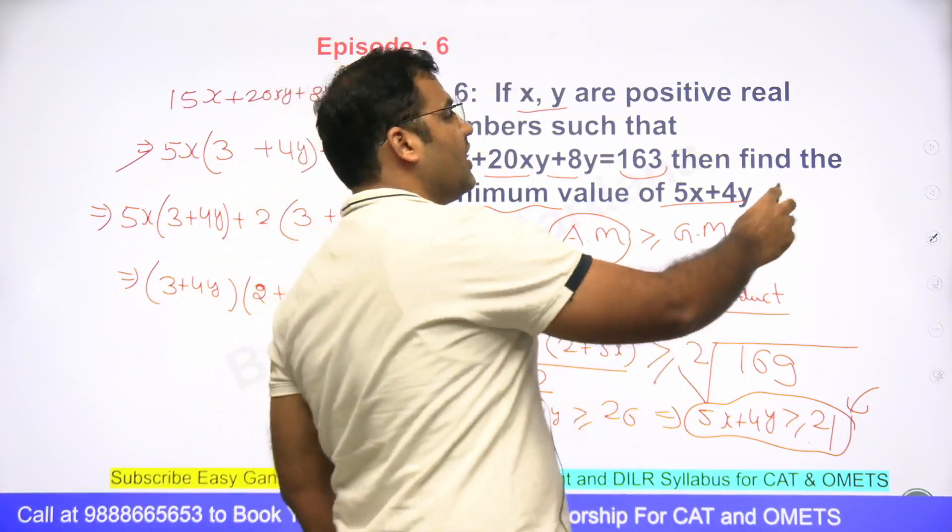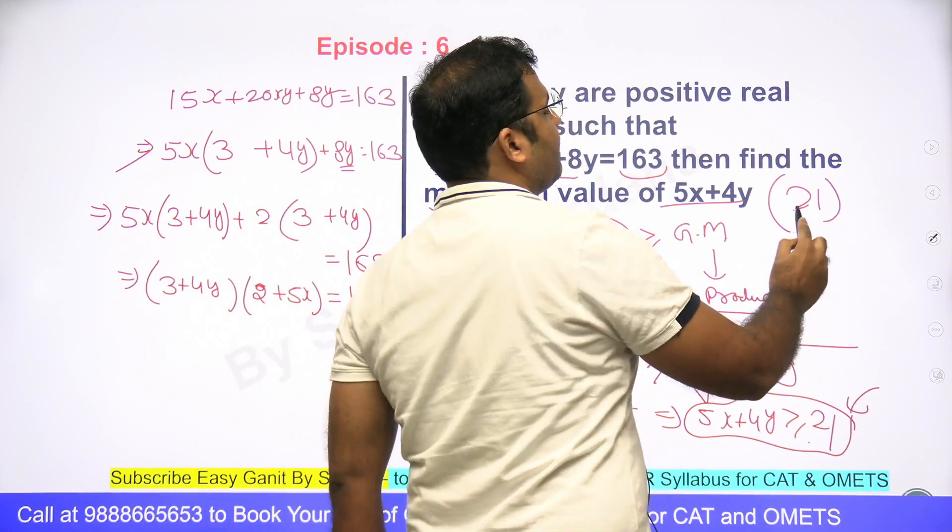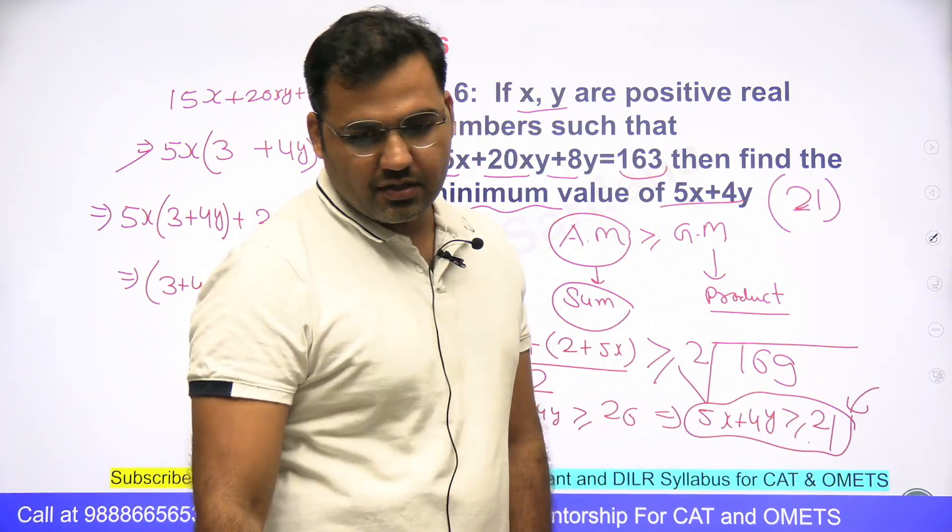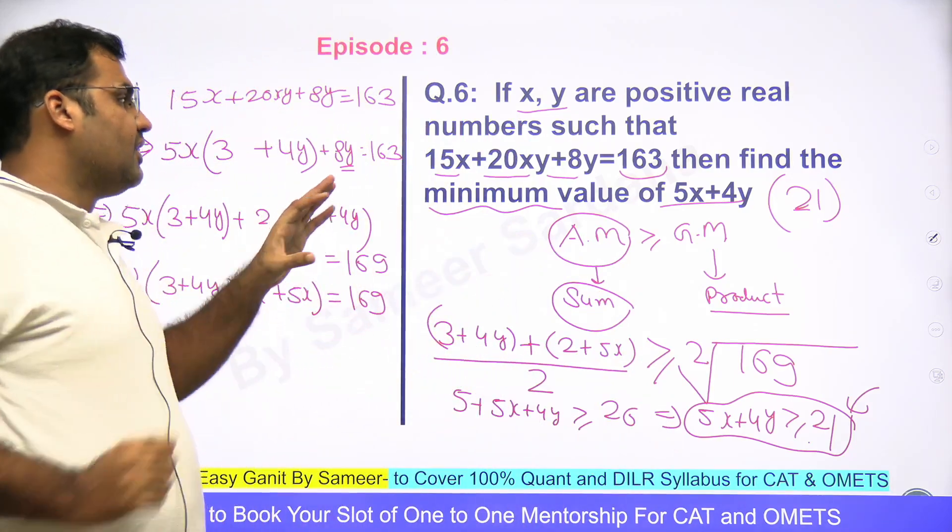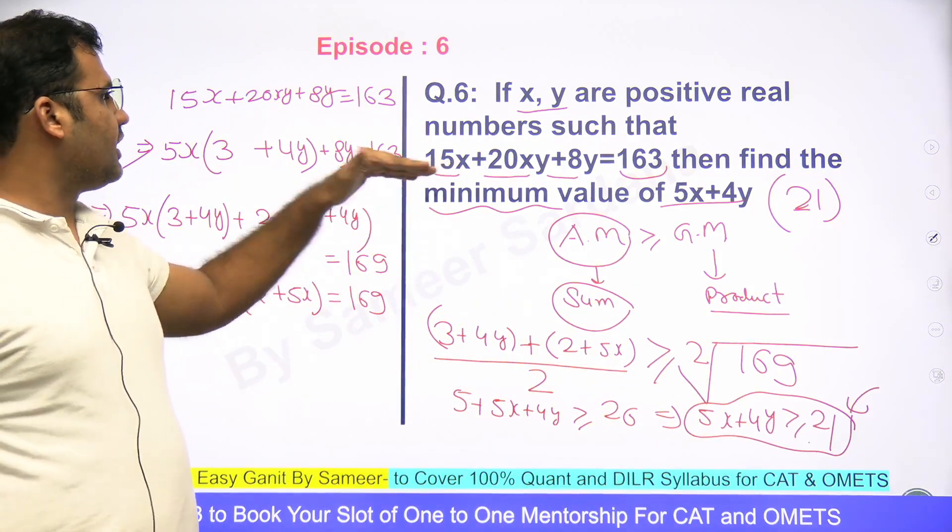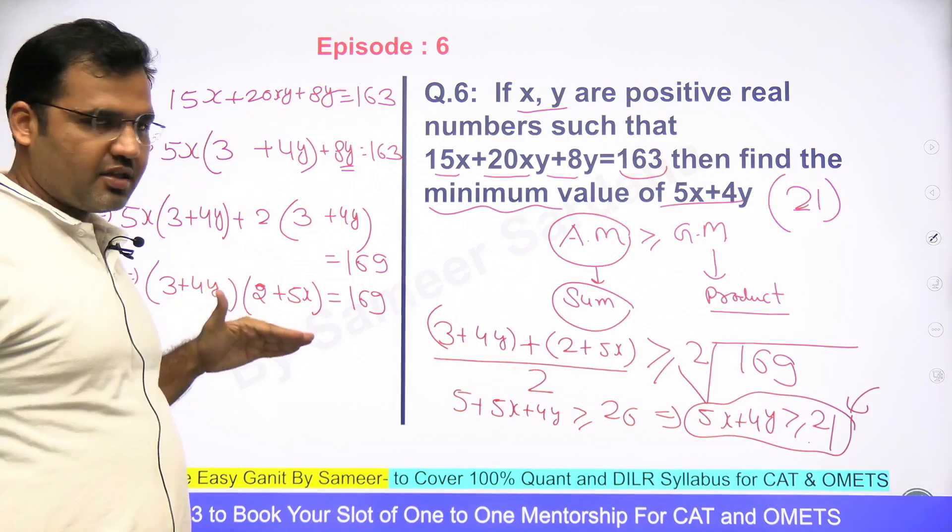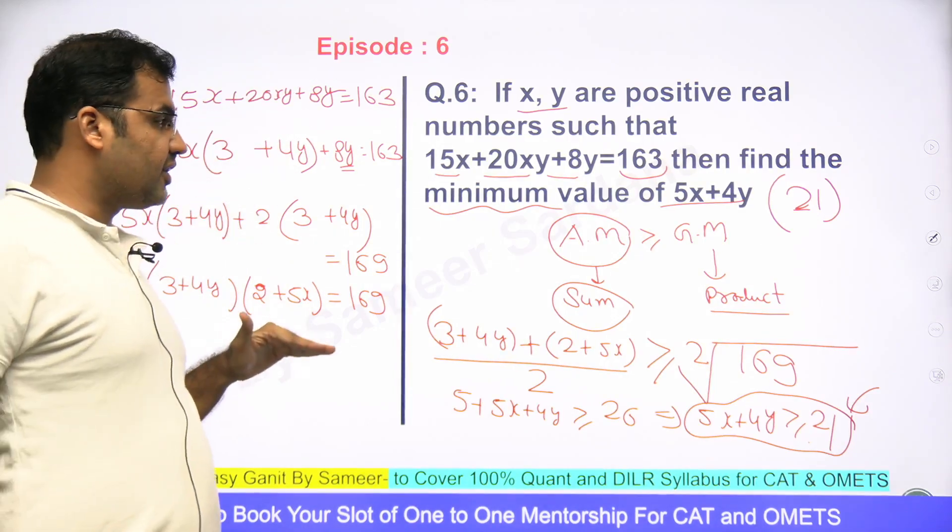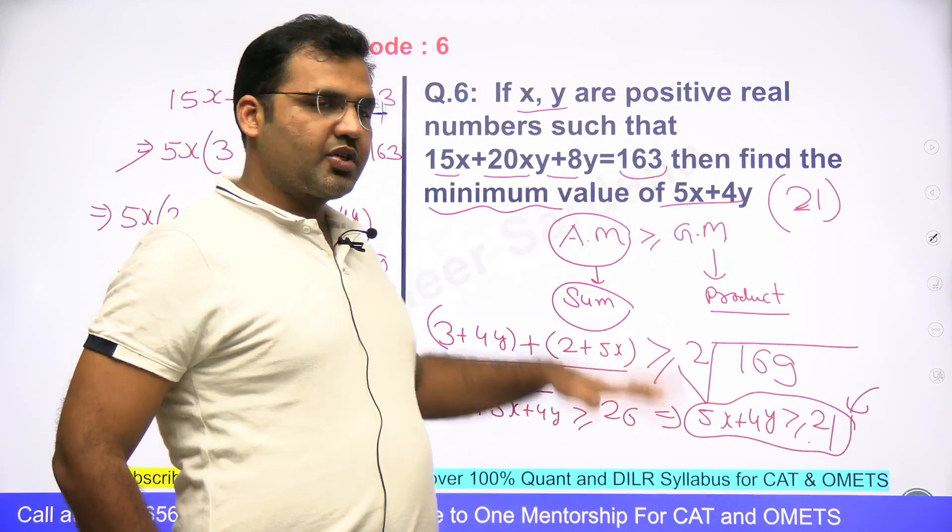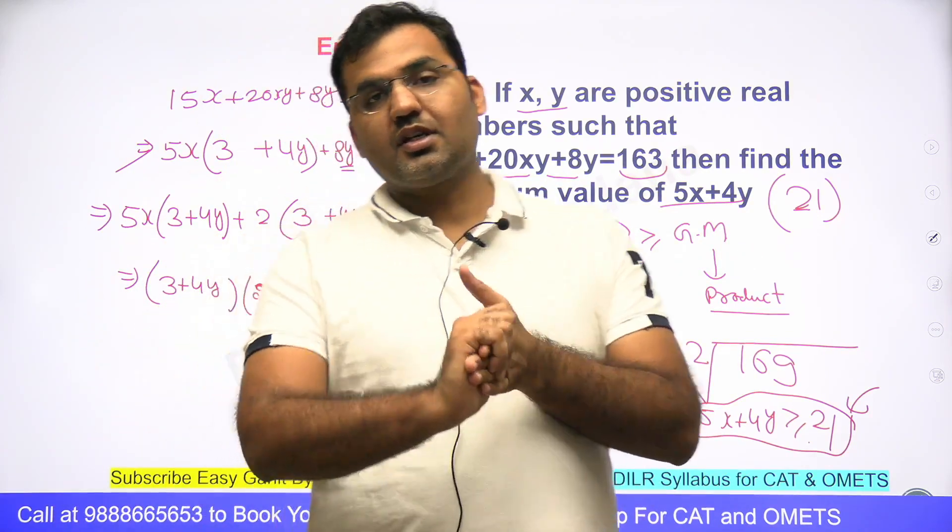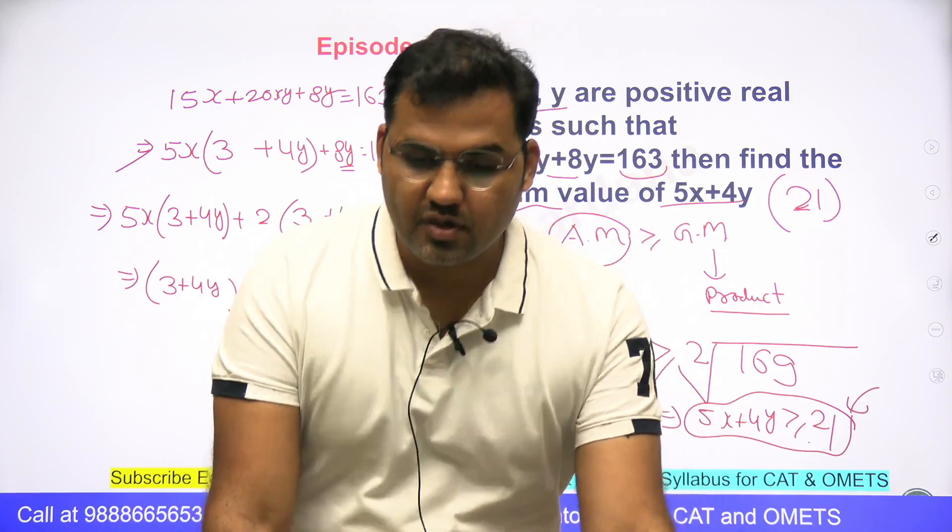One of the beautiful questions. Amazing question. You must know ki is question ko kaise karna hai. Yahan pe hamare do concepts cover hote hain. Ek toh ye equation ko finally product form mein kaise karna hai, is pe number of factors ke bhi questions hain. Secondly, AM aur GM wala role apply karna chahiye. Beautiful question. Keep this in mind. Thank you so much for watching the session. In the next video, we'll be discussing episode number seven. Thanks a lot.